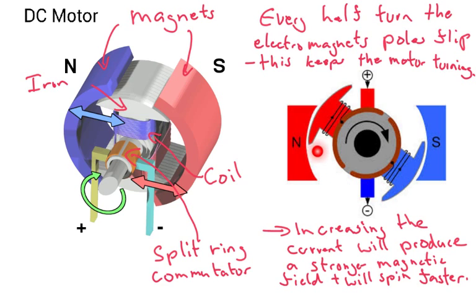As soon as it's over here, if there was no split ring commutator, it would stop turning. The motor would stop turning, and it would just be happy. Then this would be south attracted to north, and the north attracted to the south, and it would just stop.